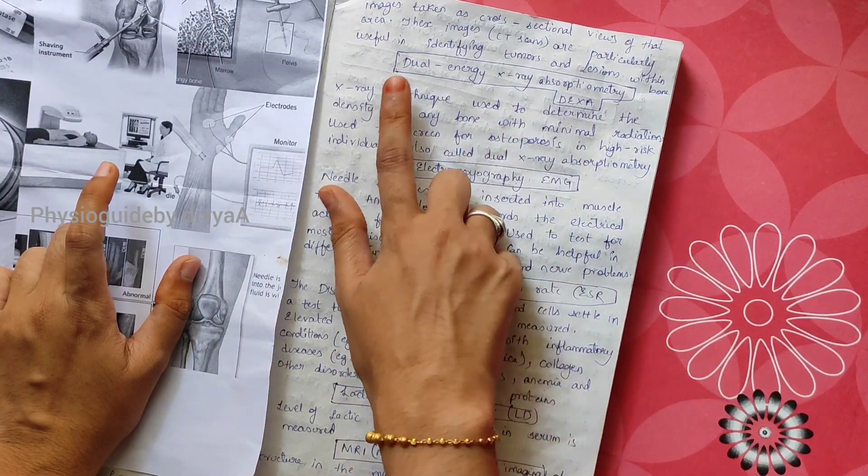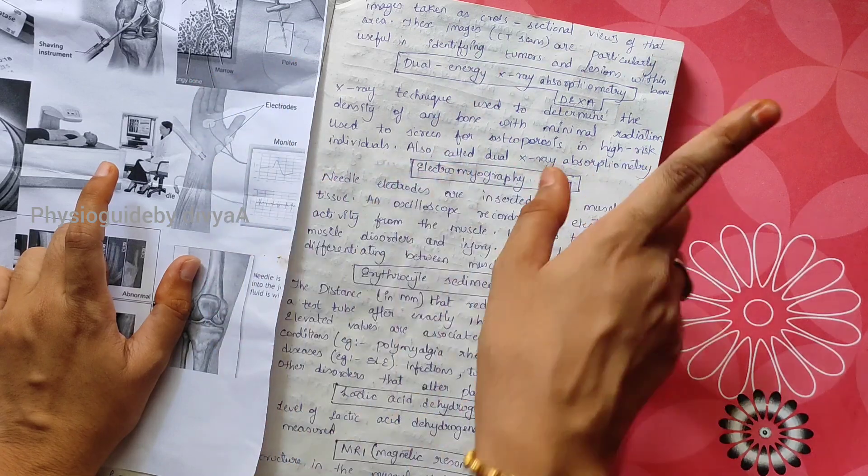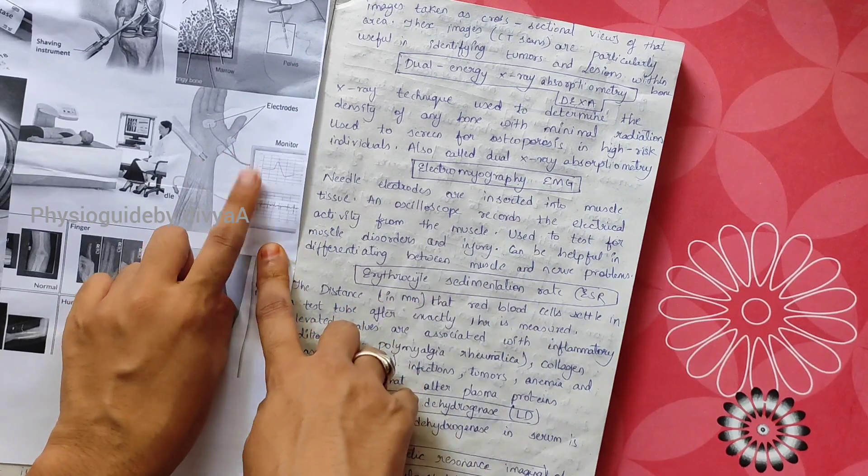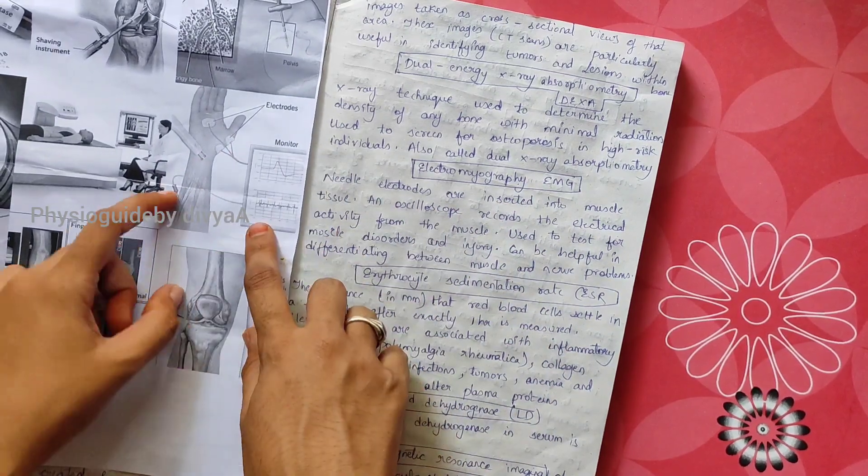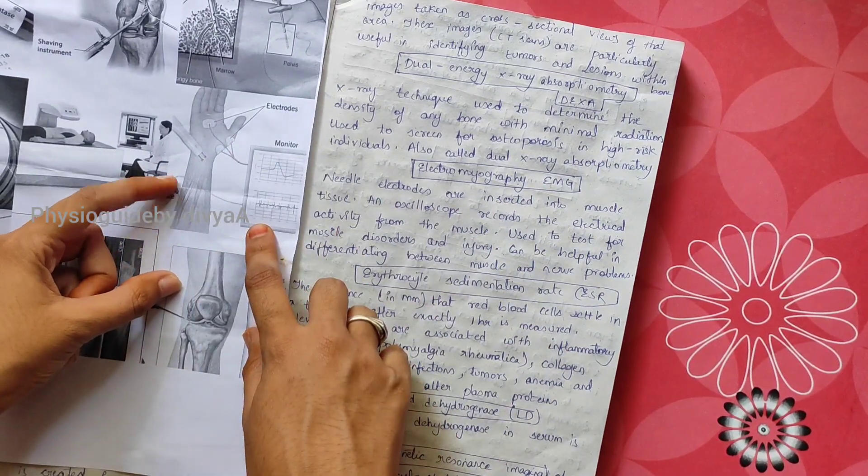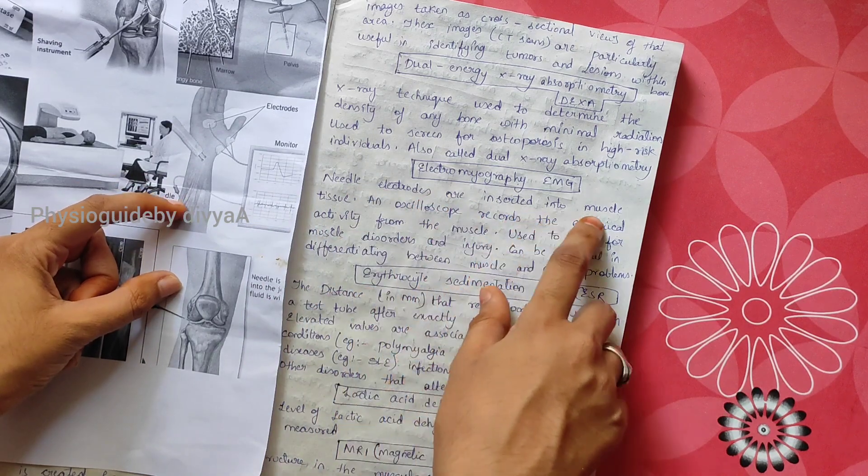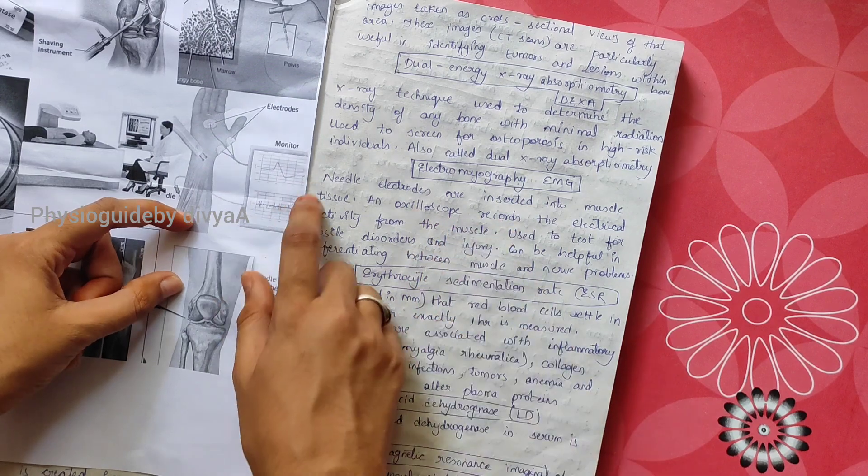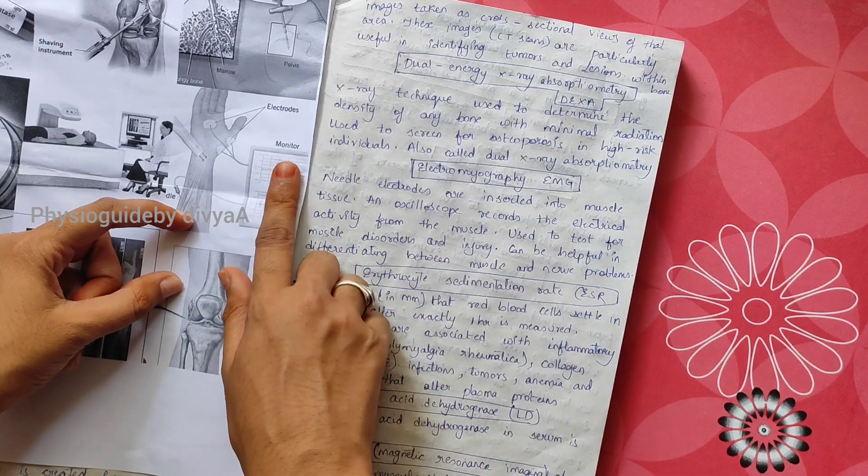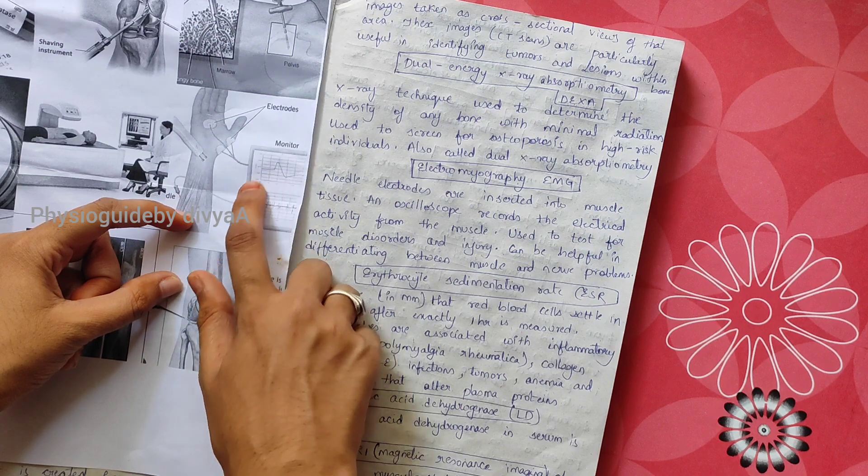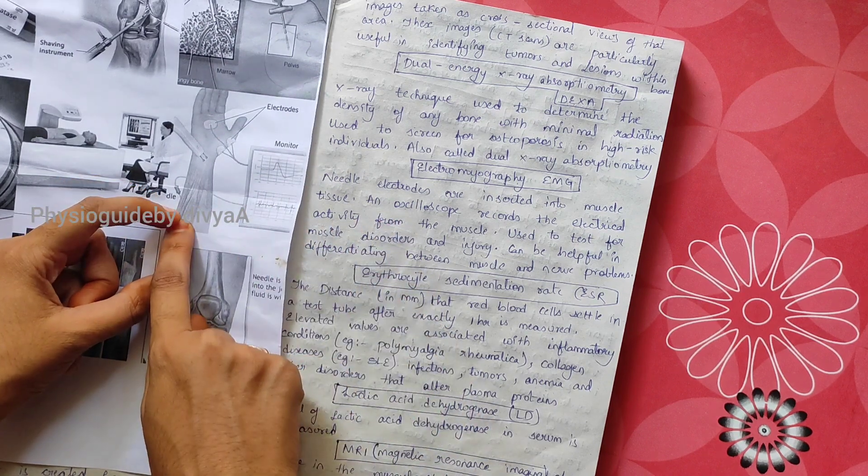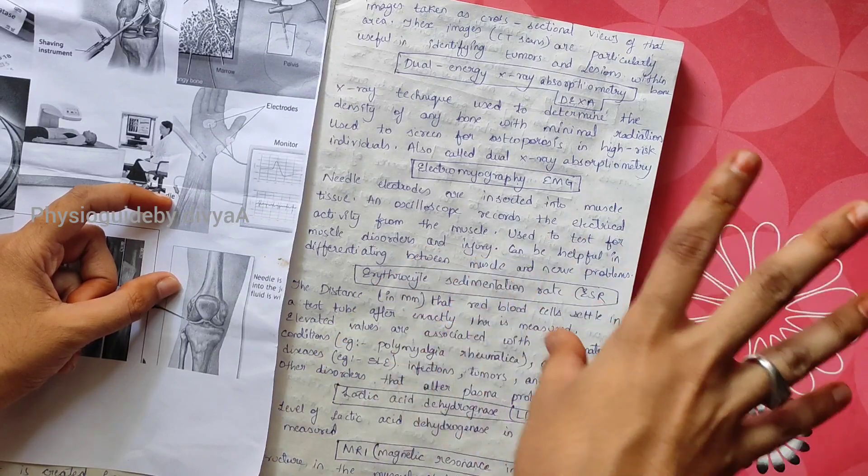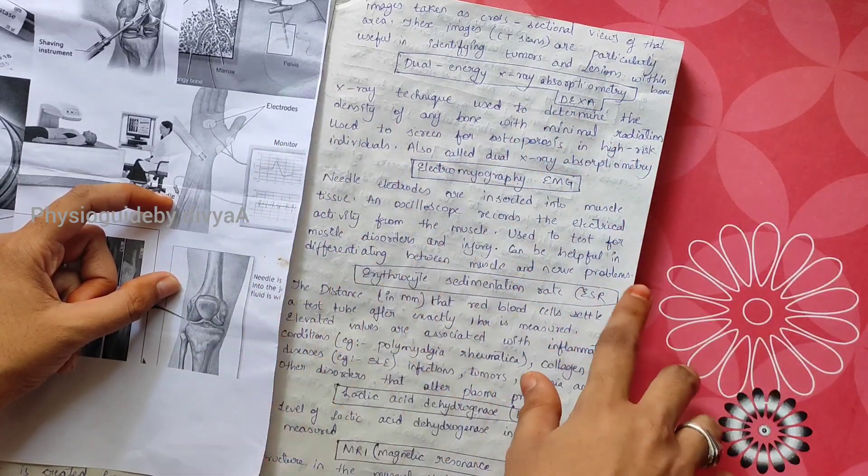EMG, or electromyography: see this image. Needle electrodes are inserted into the muscle tissue and an oscilloscope, this monitor, records the electrical activity from the muscle. This is used to test for muscle disorders and injuries and can help differentiate between muscle or nerve problems.